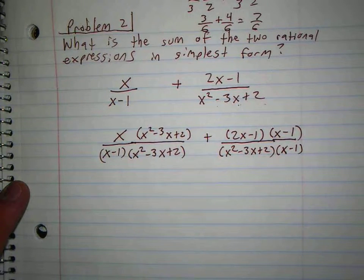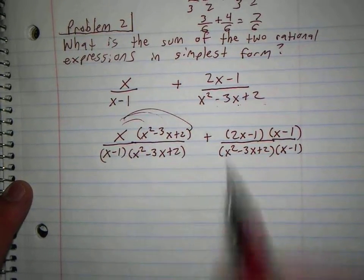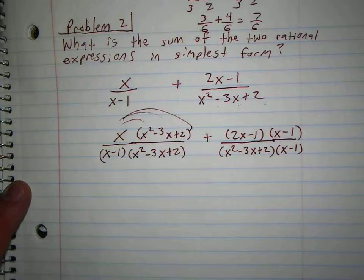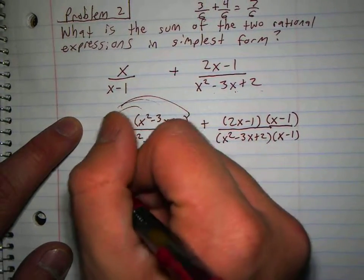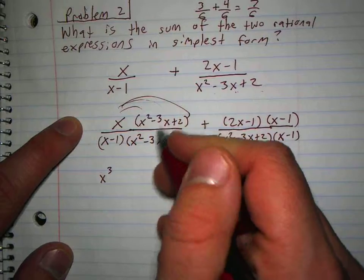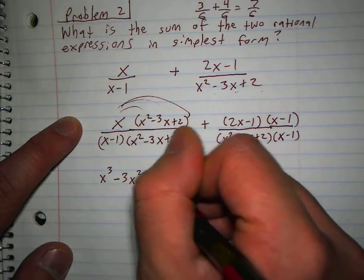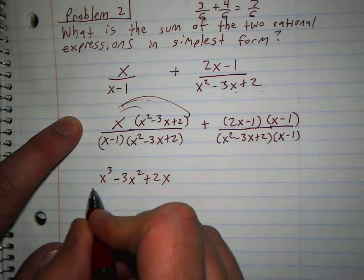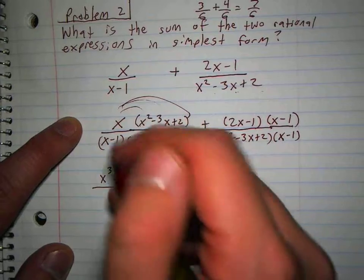Now what's the problem with doing it this way? I'm going to have to distribute that x to those three, right? So I'd have to do x times x squared is x cubed, x times minus 3x is minus 3x squared, x times 2 is 2x.